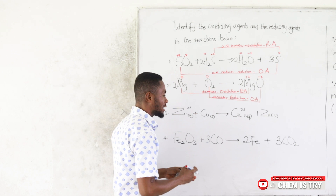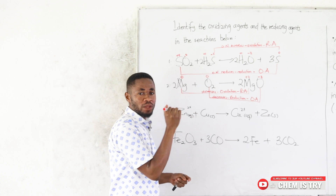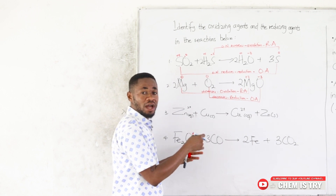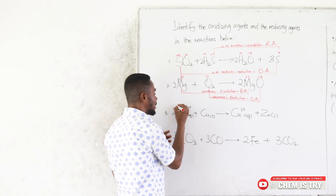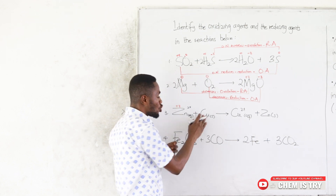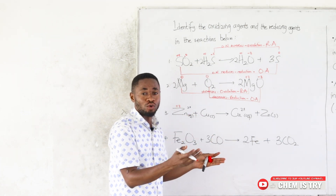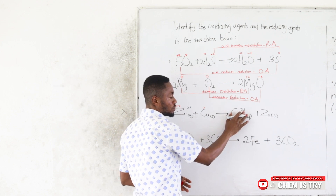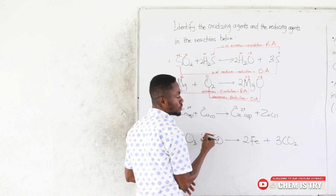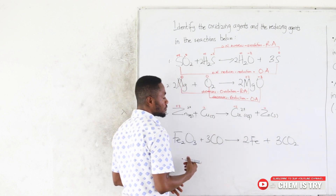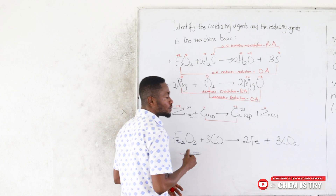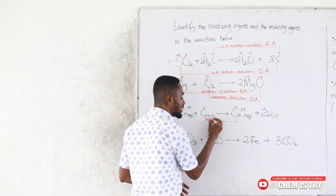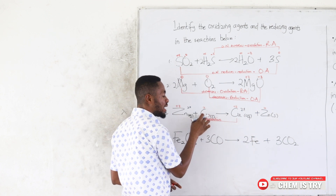In the third example: Zn²⁺ is a simple ion, so its oxidation number equals its charge: +2. Cu is a free element, so its oxidation number is 0. On the product side, Cu²⁺ is a simple ion with charge +2, and Zn is now alone with oxidation number 0. Copper goes from 0 to +2 — an increase, which is oxidation — so copper is being oxidized and becomes the reducing agent.